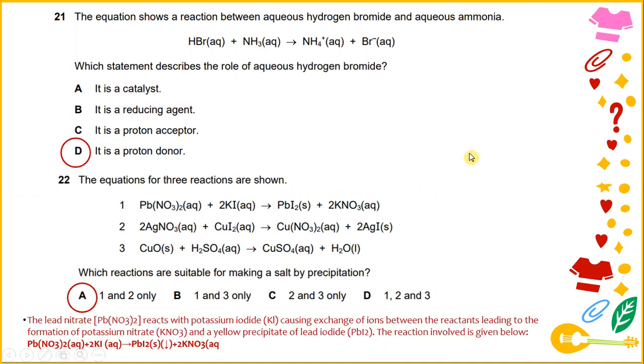The equation for three reactions are shown. Lead nitrate reacts with potassium iodide to produce PbI2 plus 2KNO3. Number two is 2AgNO3 plus CuI2 to produce Cu(NO3)2 plus 2AgI, and number three is CuO plus H2SO4 to produce CuSO4 plus H2O.